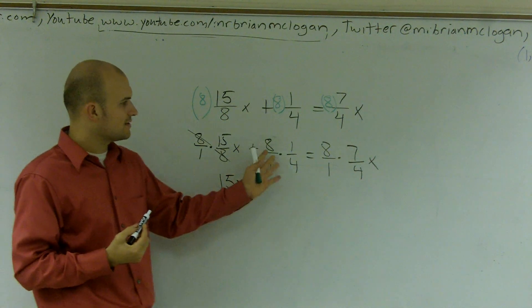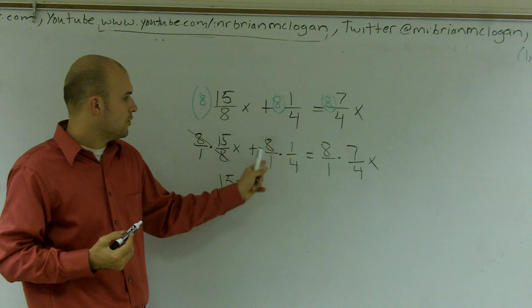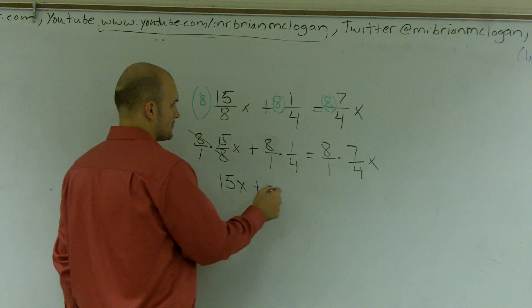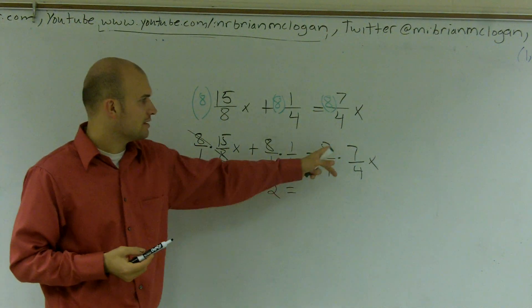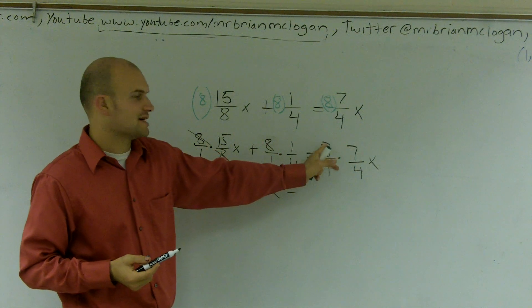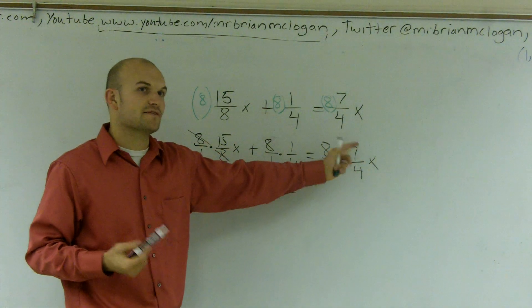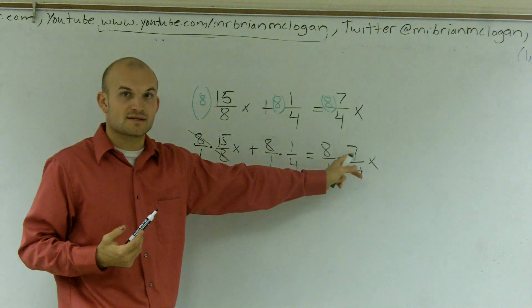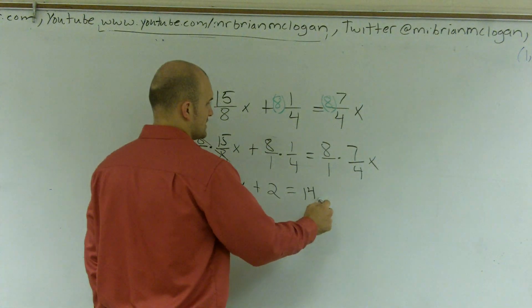However, over here, these aren't going to cancel out. But what you have is eight times one is eight, one times four is four. Eight divided by four is two equals, and then the same thing over here. Eight, you could just cancel these out. You could say eight divided by four is two. Two times seven is 14. Or you could do eight times seven, which is 56, divided by four, which is still going to give you 14x.